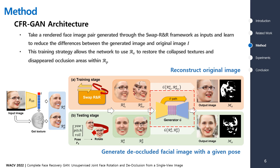Thus, during the testing stage, our model produces a high-quality de-rotated and de-occluded image and an occlusion mask by taking the rendered RPS and RIS as inputs, which are rotated only once to the desired pose.